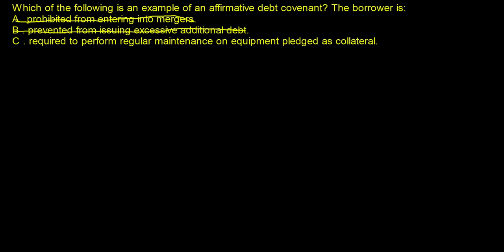The affirmative debt covenant is C: required to perform regular maintenance on equipment pledged as collateral. Requiring regular maintenance is a reduction of risk, and it's also something that they should be doing anyway. So the correct answer is C. The other two are not positive covenants — those are negative covenants.